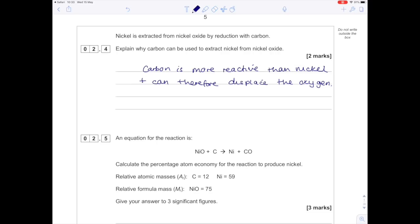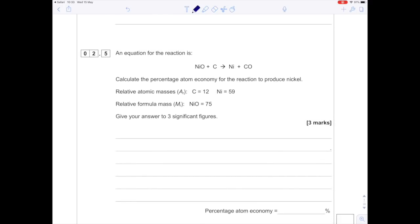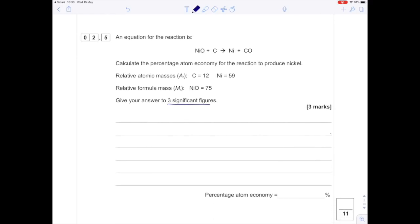Nickel is extracted from nickel oxide by reduction with carbon. Explain why carbon can be used to extract nickel from nickel oxide. This is all to do with the reactivity series - it's because carbon is more reactive than nickel and can therefore displace the oxygen.